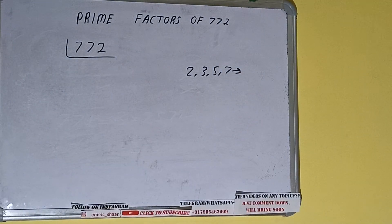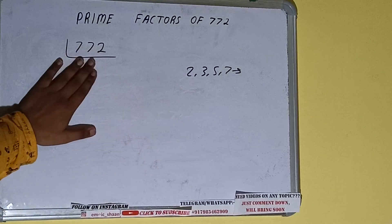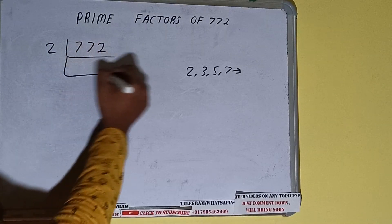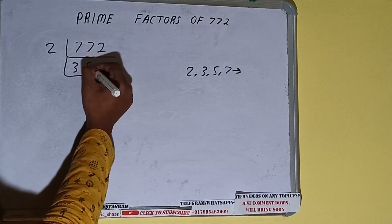Alright. So we'll check with the lowest prime number we have, that is 2. Is the number 772 divisible by 2? Yes it is, because the number is even, and we'll be having 386.